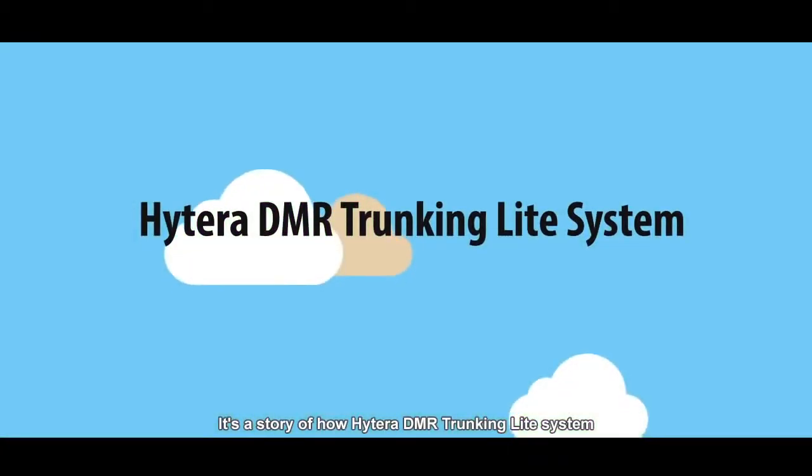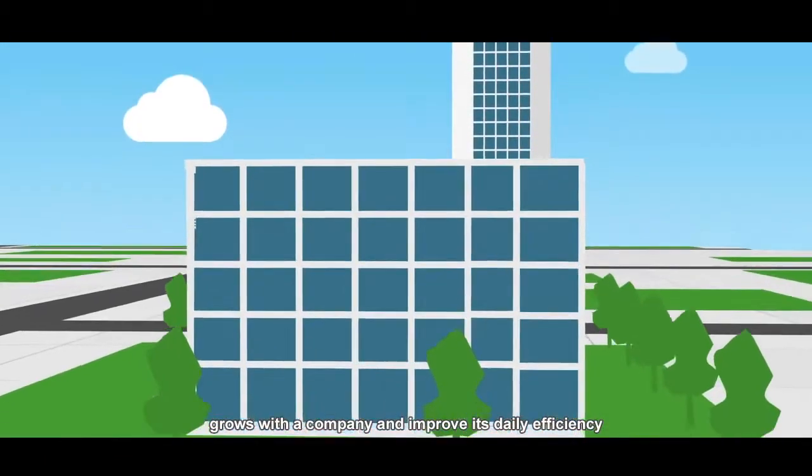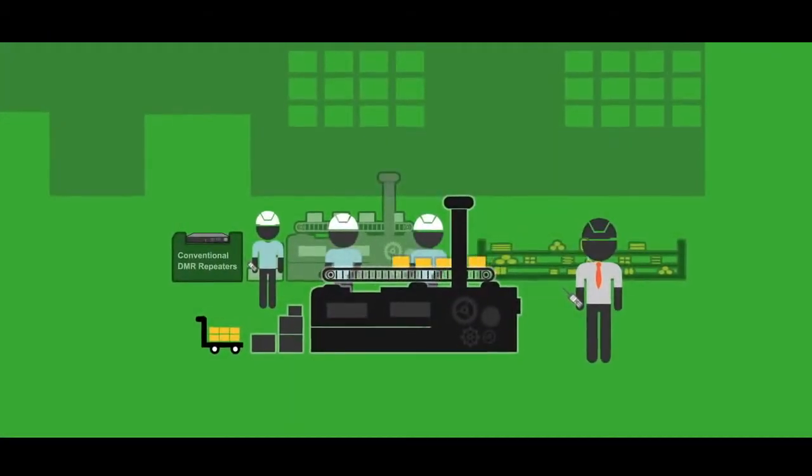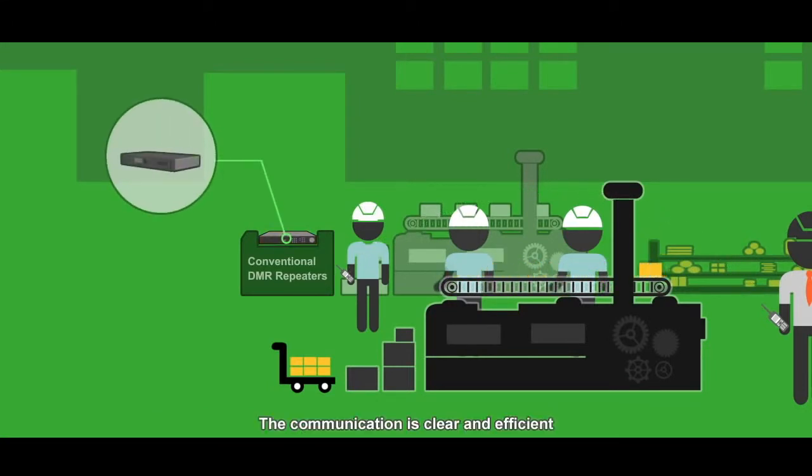It's a story of how Hytera DMR trunking light system grows with a company and improves its daily efficiency. The company owns a factory which runs well with the help of Hytera conventional DMR repeaters. The communication is clear and efficient.